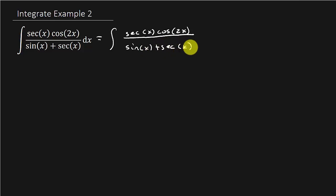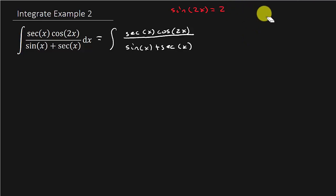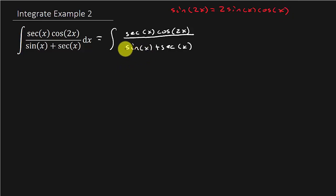Do you remember your trig identities where it says sine 2x equals 2 sine x cosine x? So right here, if I could get 2 sine x cosine x, I could change that to sine 2x.